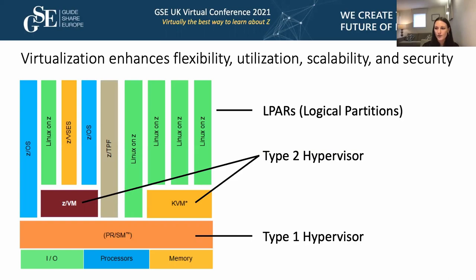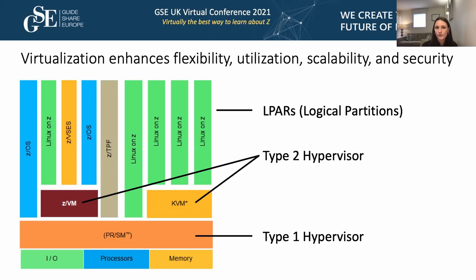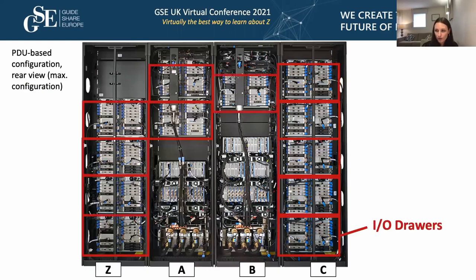The Type 2 hypervisor sits on top of PR/SM and allows further virtualization beyond the 85 LPAR limit — for example, separate DevOps environments or testing individual applications in isolation. z/VM is IBM's z proprietary server virtualization, completely integrated into the full stack. KVM is an open-source choice for IBM z virtualization for Linux workloads, best suited if you want to run Linux on z.